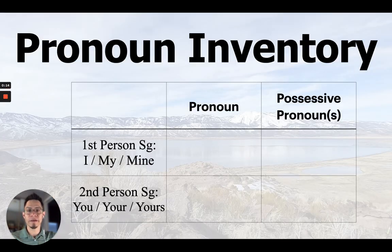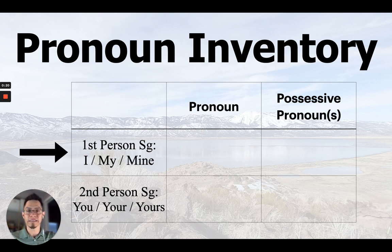As a review, here is a brief pronoun inventory of what we have looked at so far. Last week, we looked at the first person singular, which refers to oneself. So, I — I is first person singular. The possessive is my and mine. That's what we looked at last week.